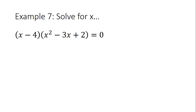We have x minus 4 times the quantity x squared minus 3x plus 2 equals zero. Is the zero step satisfied? Yes. Is this fully factored? No. How do I know? Something multiplies to give me 2 but adds to give me negative 3: negative two and negative one.